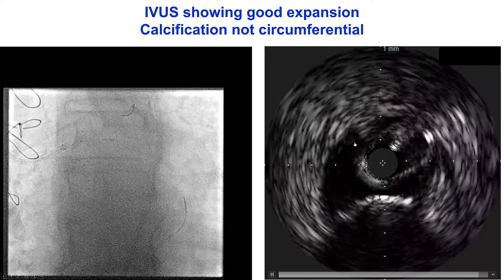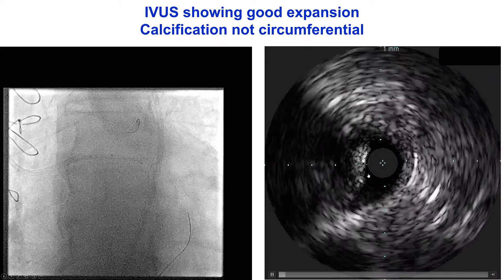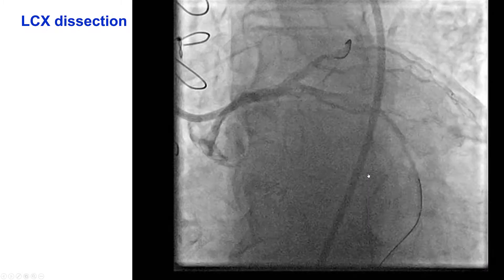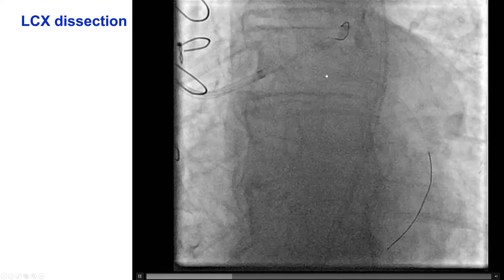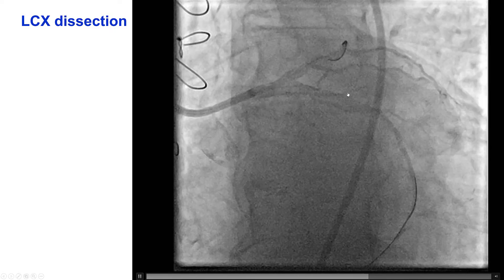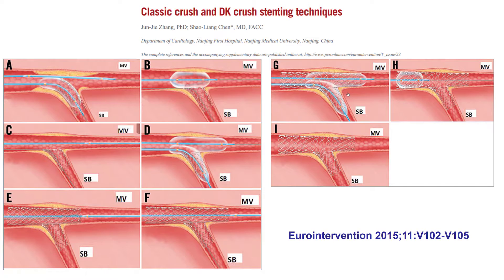This is the LAD wire, and this is the left main without significant disease. We did, however, have a dissection in the circumflex because of the aggressive pre-dilation efforts. We decided to do the double kiss crush technique for multiple reasons: we had a big dissection into the circumflex, so we didn't want any chance of losing wire access to that vessel by stenting first into the LAD, and there was also similar vessel size in both the LAD and the circumflex.